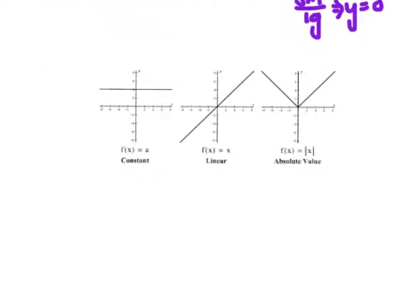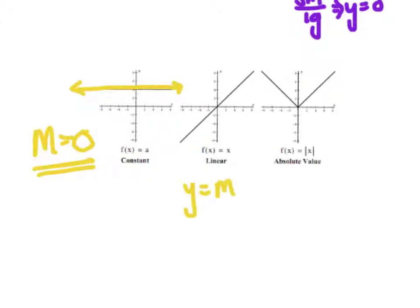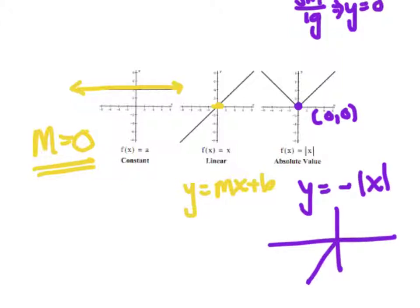A constant function is a nice horizontal line, and it has a slope of zero. A linear function is in the form y equals mx plus b — with no b in this case — and it has a constant slope throughout. Lastly, absolute value is a big heavy hitter we'll deal with quite a bit. Its special point is zero, zero. A positive absolute value of x makes a V shape; if I had y equals the negative absolute value of x, that would flip it upside down.